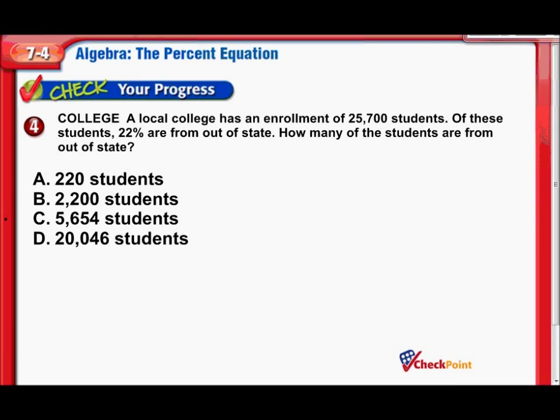Let's see if we have another one. Word problem. Here we go. A local college has an enrollment of 25,700 students. That's a lot of kids. Of these students, 22% are from out-of-state. How many of the students are from out-of-state? Well, 22% of them are from out-of-state. 22% of the 25,700 are from out-of-state.